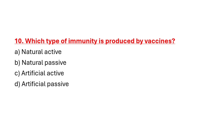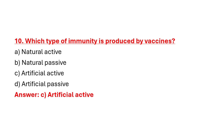Question 10: Which type of immunity is produced by vaccine? Option A: Natural active. Option B: Natural passive. Option C: Artificial active. Option D: Artificial passive. Correct answer is Option C: Artificial active.